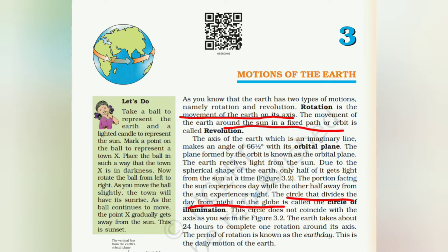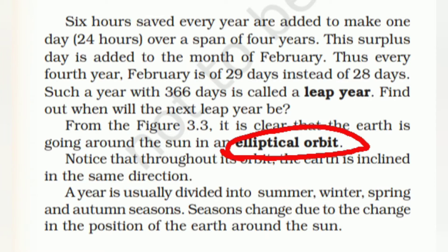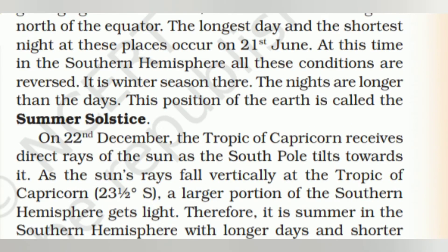Chapter 3 is 'Motions of the Earth,' covering rotation, revolution, the orbital plane, and the circle of illumination — explaining why seasons change, time changes, and why there's a leap year. Rotation is the movement of Earth on its axis; revolution is the movement around the sun. The circle of illumination divides day from night. The elliptical orbit is why days are short in winter and long in summer — the seasons change because Earth revolves around the sun, and the rotation causes day and night.